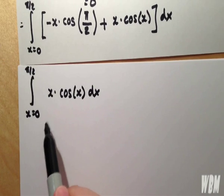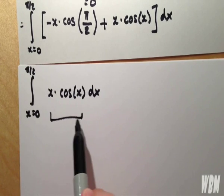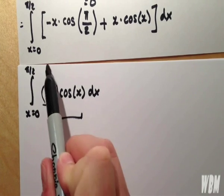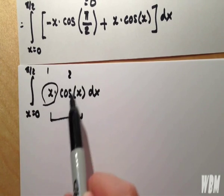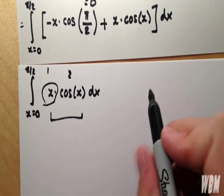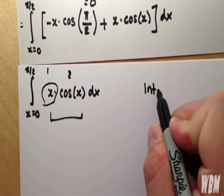Now this leaves us with a slightly more difficult situation here, because we're integrating with respect to x, and we have two x terms here, so we're going to integrate by parts.